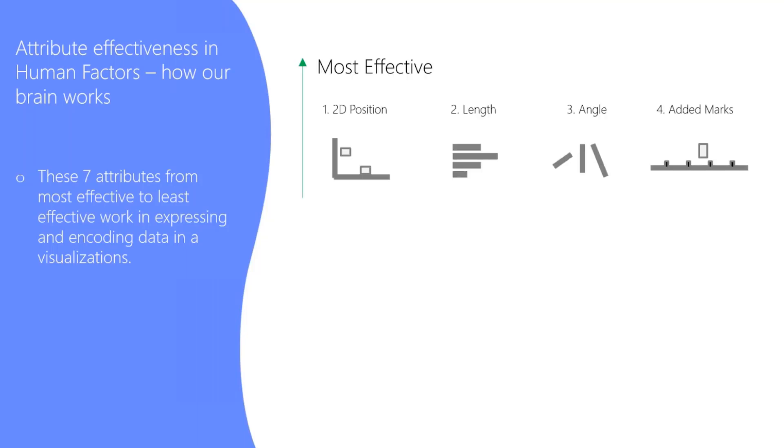So when we talk about pulling this together into charts, we look at what's the most effective and what's the least effective. So out of the six areas that I just showed you, we can use these in different ways to ensure that our point gets across effectively in the story that we're trying to tell. So when we look at the most effective ways for our brain to not only understand what we're looking at, but remember it, it's 2D position, the length.